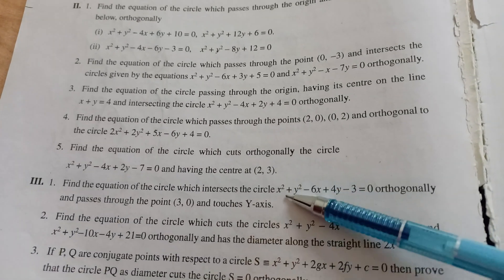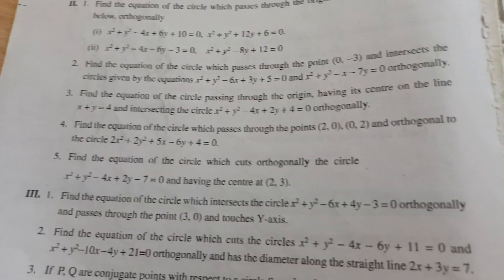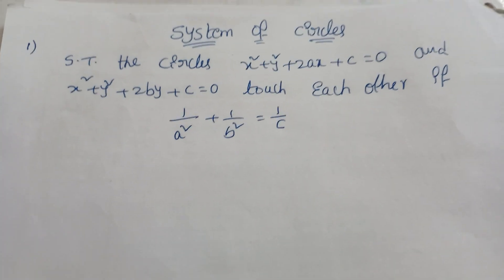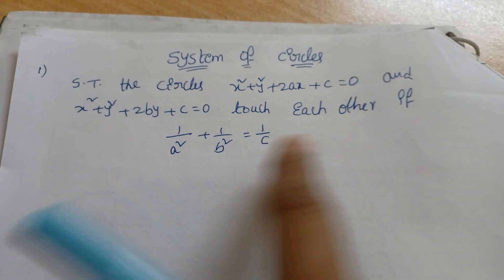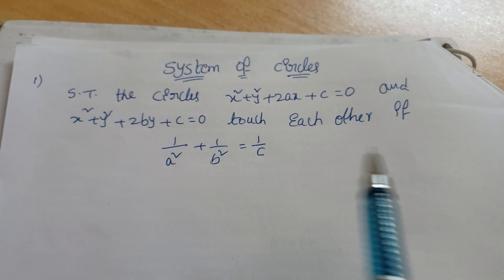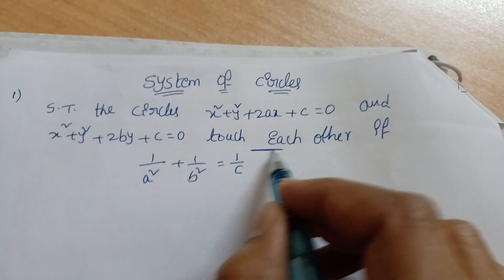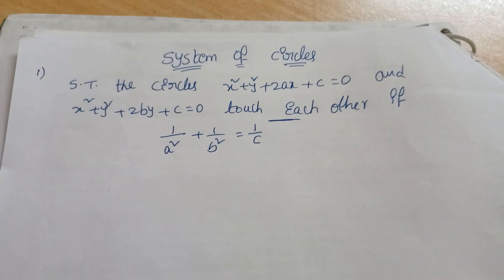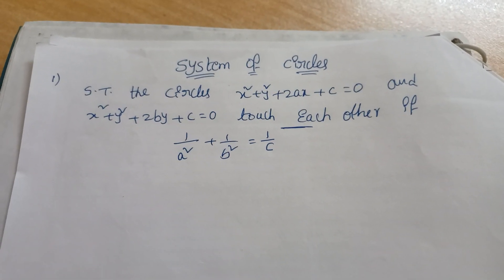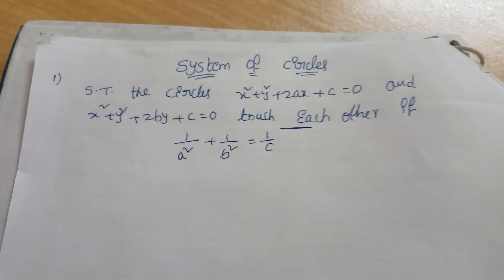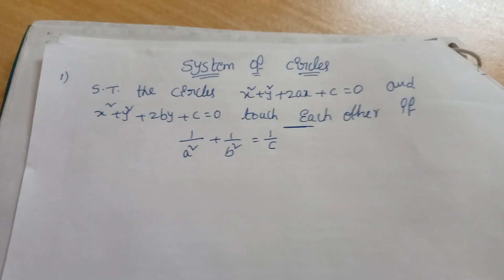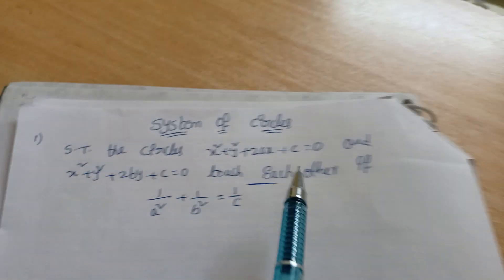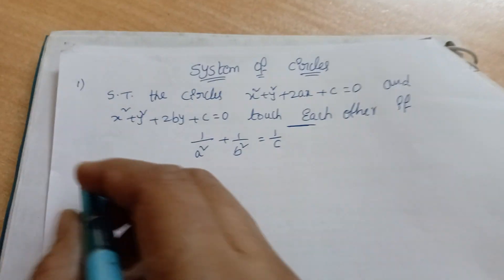Now, two circles are given that touch each other. What is the condition for touching? C1C2 = r1 + r2 or r1 − r2. We don't know whether they touch internally or externally, so you must write r1 ± r2. First, find C1, r1 and C2, r2 from the given circles.